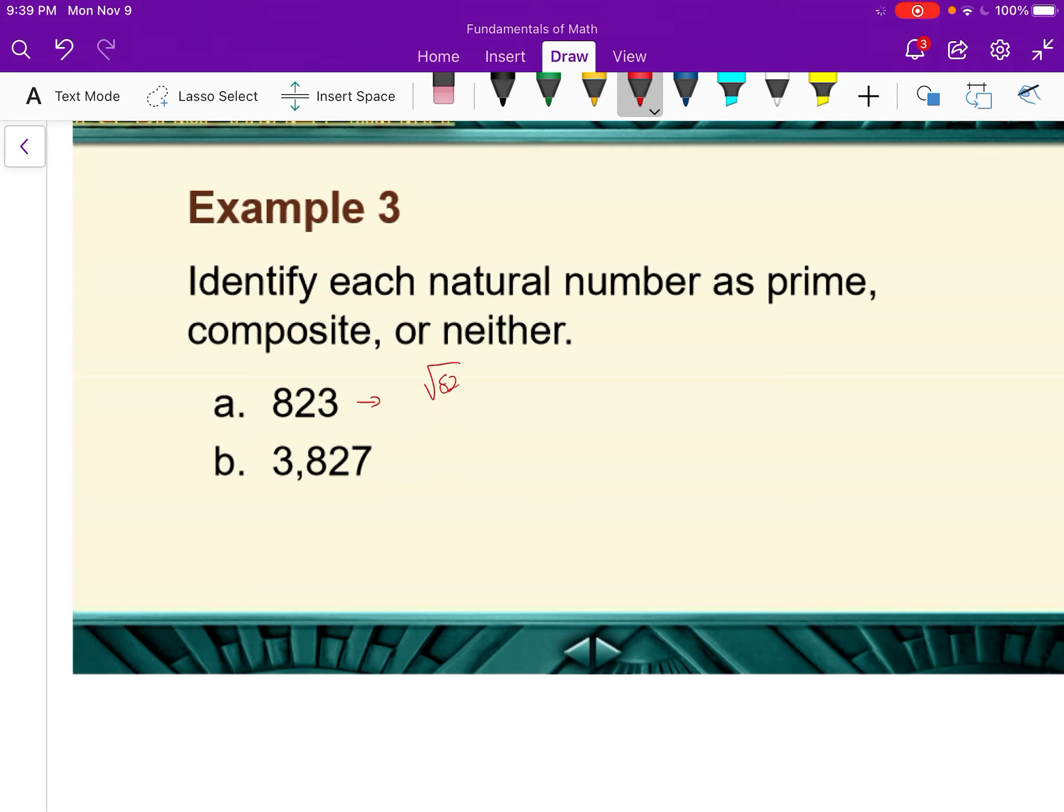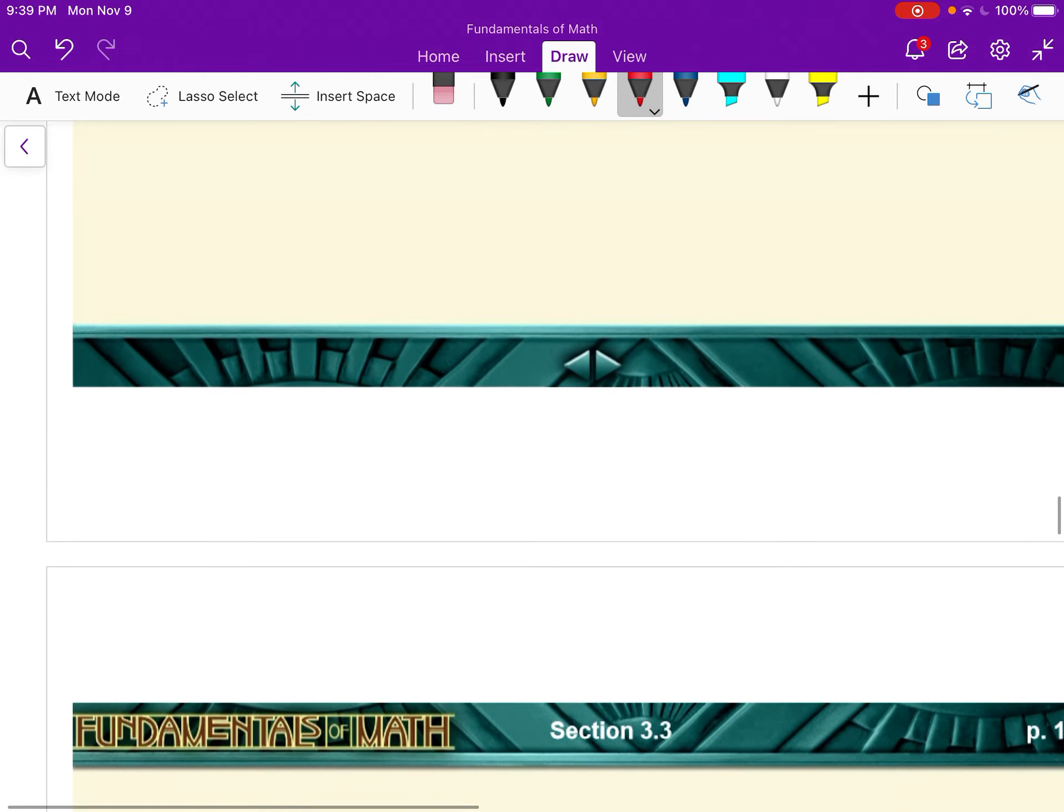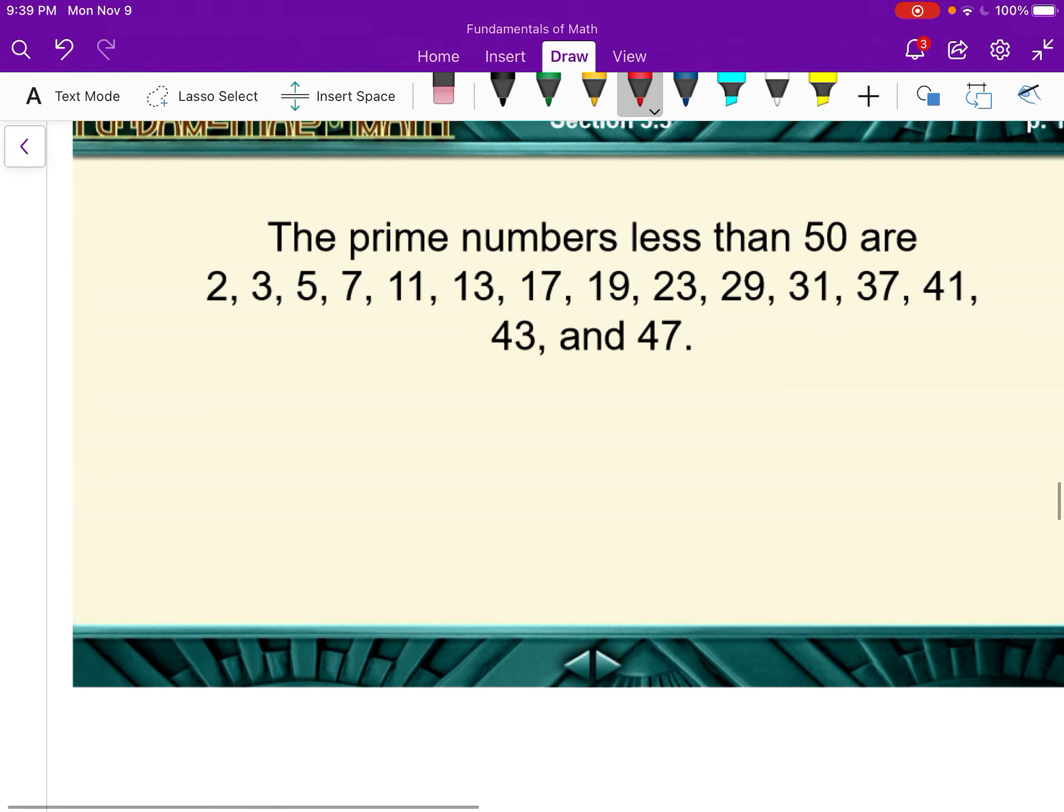823. Well, the square root of 823, I don't really know what that is, but I do know the square root of 900 is 30. So I would say we can check numbers less than 30. So we can try 2. 2 doesn't go into that because it's not even. So in fact, let's list the prime numbers. So there they are, up to 30.